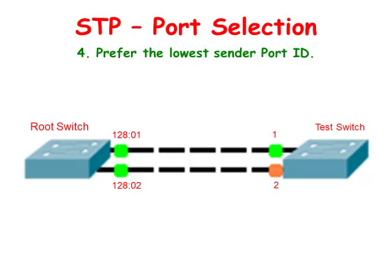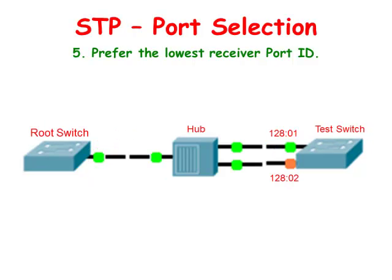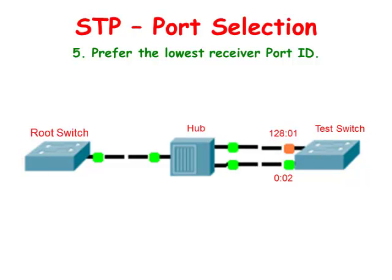The fourth rule assumes that there are only two switches connected with multiple links between them. The test switch will decide which interface port to make the root port by looking at the connected switch and choosing the port with the lowest port ID. We can influence which port the test switch uses as the root port by lowering the port priority number on the corresponding connecting switch port. The fifth rule applies when the BPDUs sent by the connected switch are the same — the test switch will then use its own lowest port ID. The test switch can choose a new root port by lowering its own port priority value.